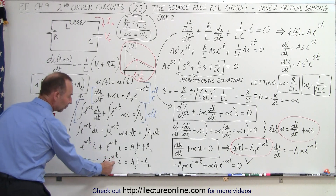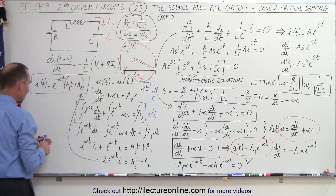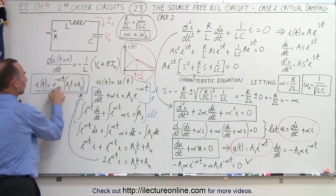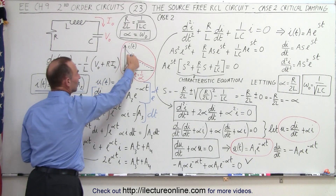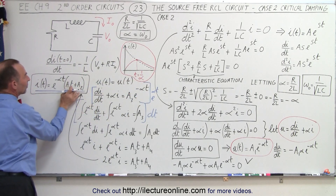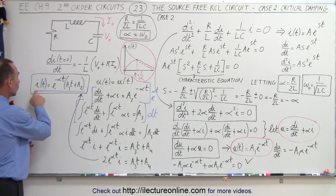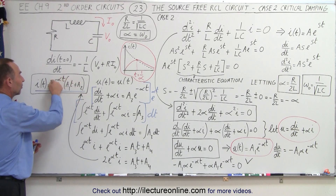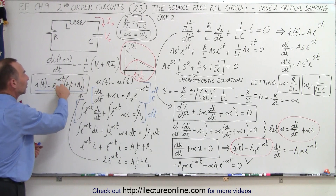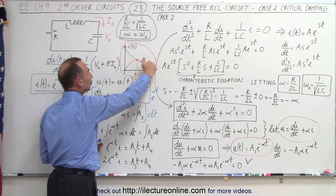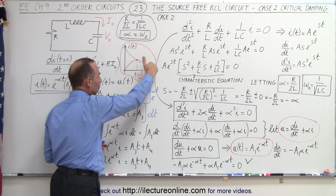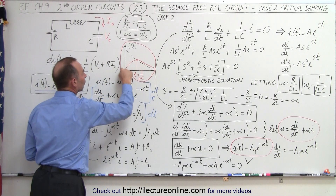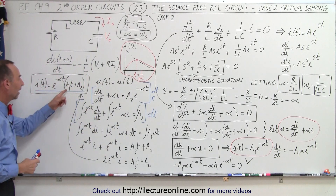If we then move the exponential to the other side and make it a negative exponent, we end up with a new equation for the current as a function of time: i(t) equals e to the minus alpha t, which is that decaying curve, multiplied by A₁t plus A₂. All we need to do is use the initial conditions to find A₁ and A₂. The exponential e^(-αt) represents the diminishing current curve, and A₁t plus A₂ represents the shape of the current as a function of time.